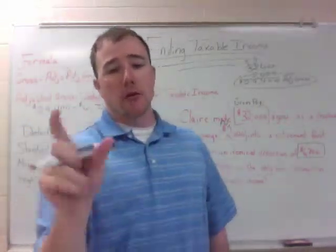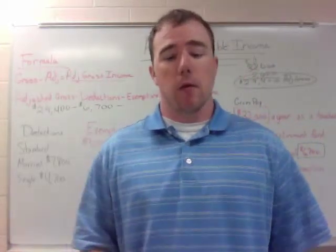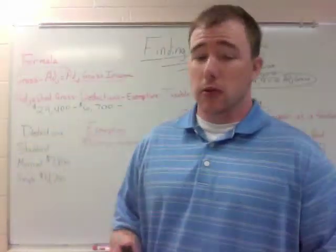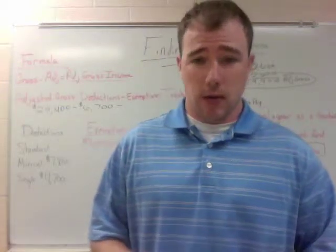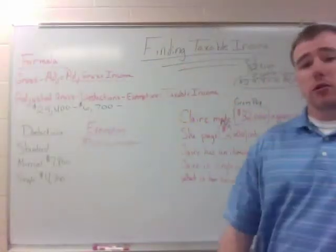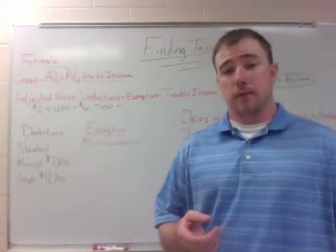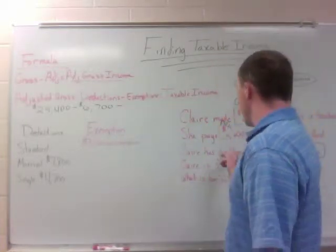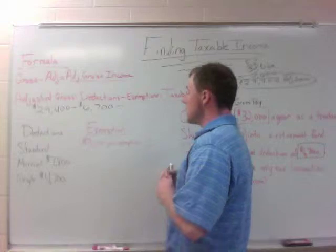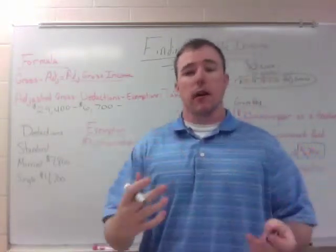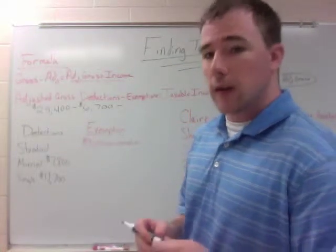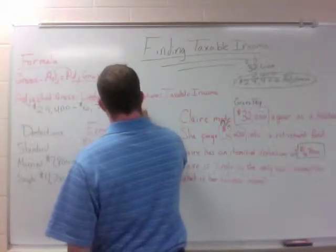Exemptions are how many people you claim on your W-4 tax form. Some families have a bunch of exemptions because they have a bunch of children. Some have one if they're single and claiming themselves. Some have two if they're married because they claim their spouse — though you don't always have to claim your spouse. Claire is single, so she's going to claim herself. She's going to have one exemption, and each exemption is worth $3,000. So she's going to get $3,000 taken off her adjusted gross income for exemptions.